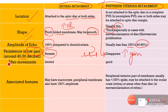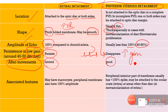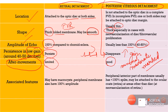Another way to differentiate between RD and PVD is based on after movements. A retinal detachment will have lower after movements compared to the posterior vitreous detachment, because vitreous is always more mobile compared to the retina. We can label after movements as minimal, moderate, and marked. In case of a PVD, it is always marked after movements. However, in case of a retinal detachment, it is moderate after movements. Where we see minimal after movements — I will tell you at the end of the video.